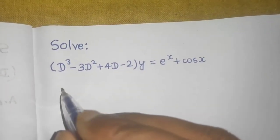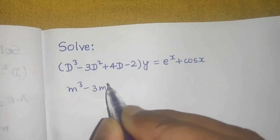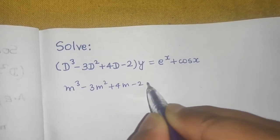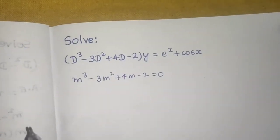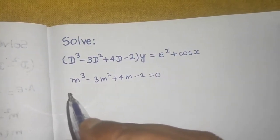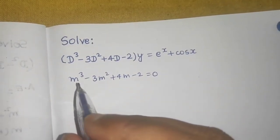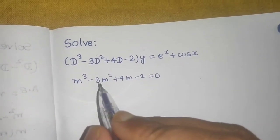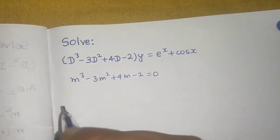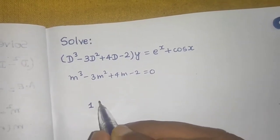Replace D by m, so we get m³ − 3m² + 4m − 2 = 0. Now we find the roots using the hit and trial method. Trying m = 1: 1 − 3 + 4 − 2 = 0, so m = 1 is a root.